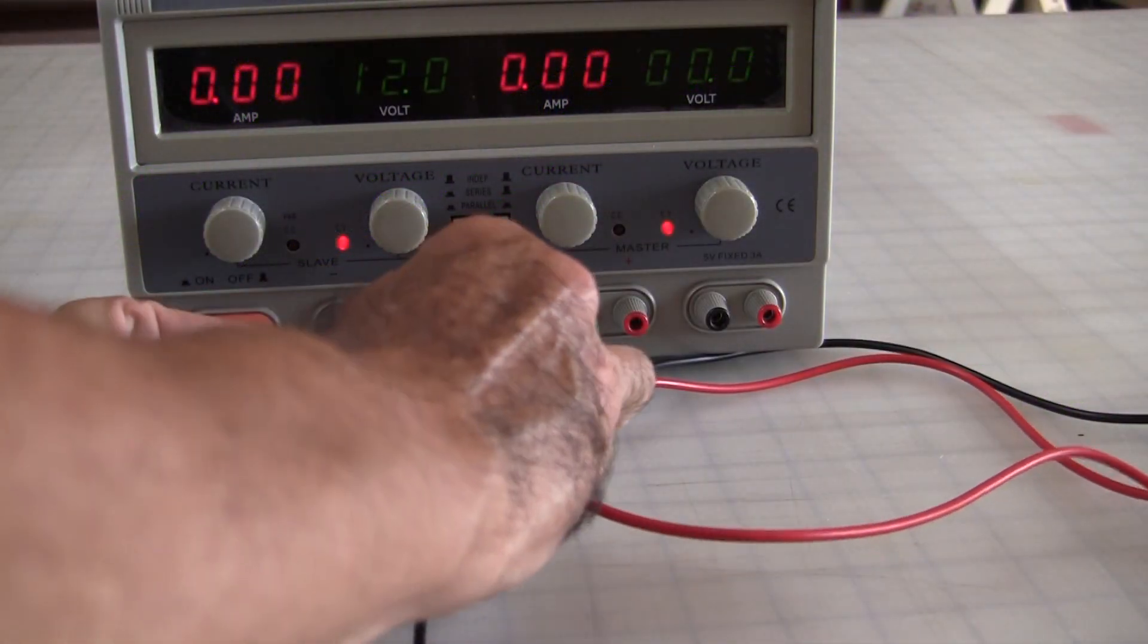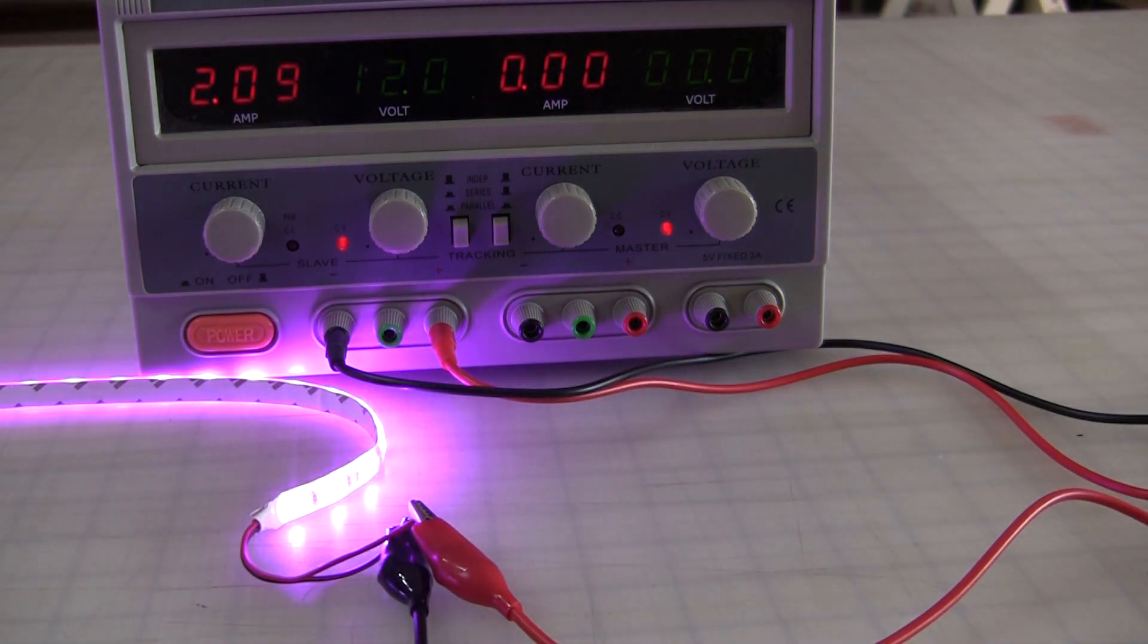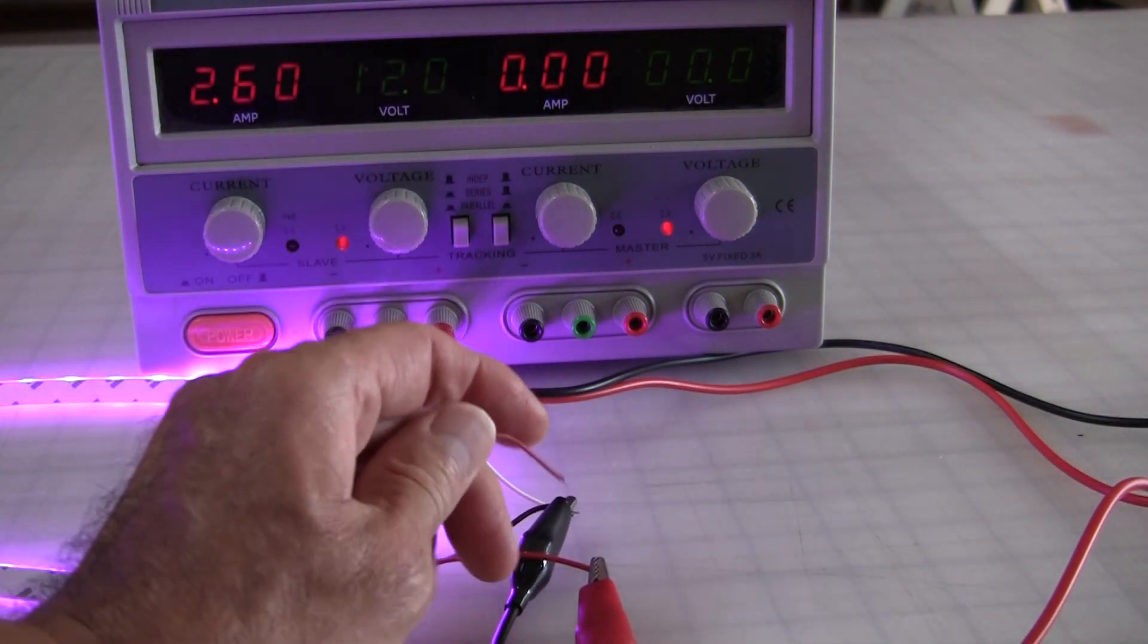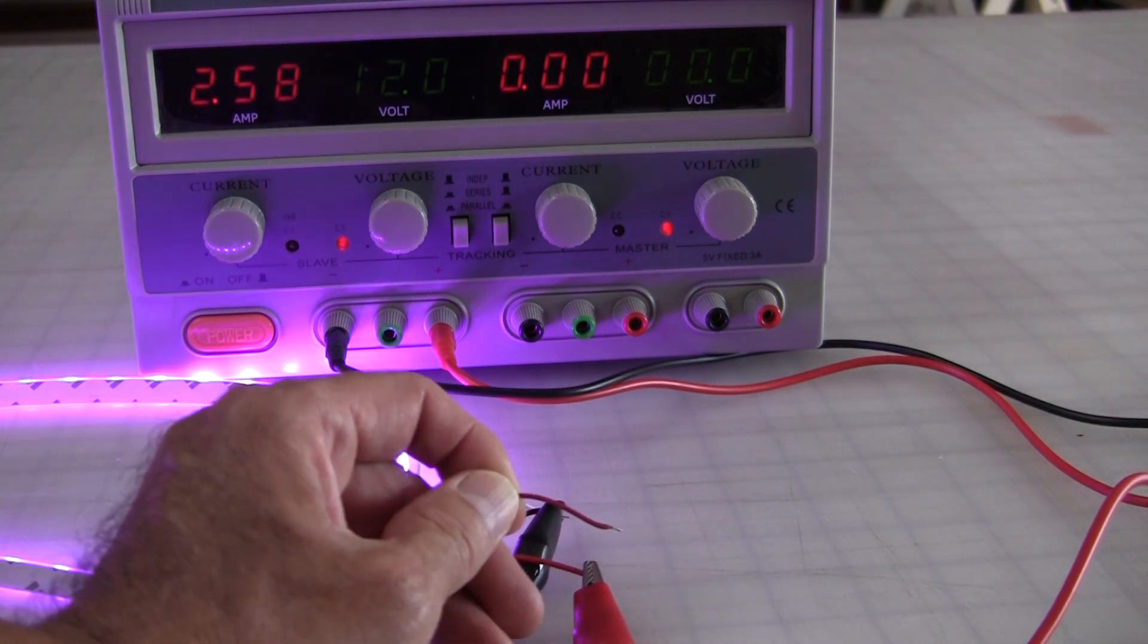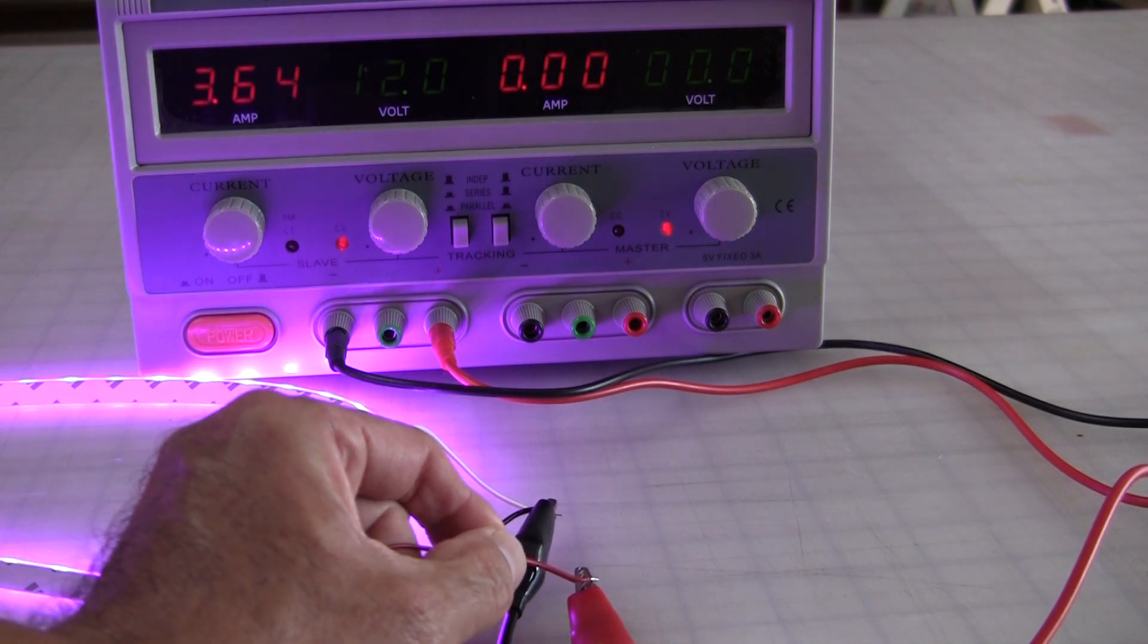Let's give my benchmark power supply a try. It's drawing over 2 amps, that's more than the 1.6 amp rating specified on Amazon. And when I connect the other end, over 3 amps. Way too much for the 2 amp power adapter I got. It's probably shutting off due to overload. We're going to need a bigger power supply.